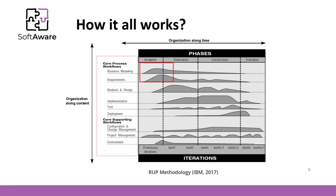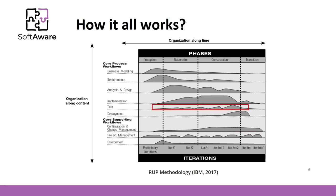During the inception phase, business modeling and requirement-related activities are the most intense. During the elaboration phase, analysis and design — basically software modeling activities — are the most important. Implementation is tightly related to the construction phase. Deployment and configuration management activities take place mostly during the transition phase. Some activities, like testing, are performed at a similar intensity level throughout the project, with testing intensity slightly increasing towards the finish.